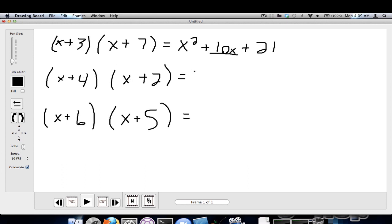X times X is X squared. Four times two is eight - that's your last parameter. Once again we use the rainbow method: X times two is two X, four times X is four X. Four X plus two X equals six X.